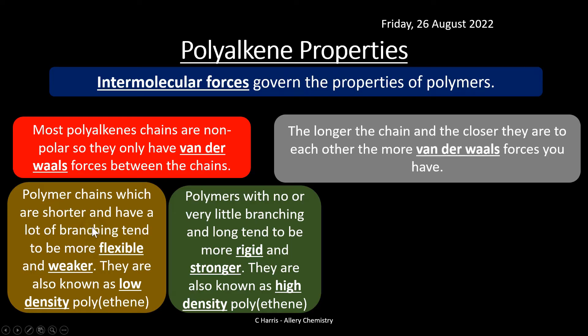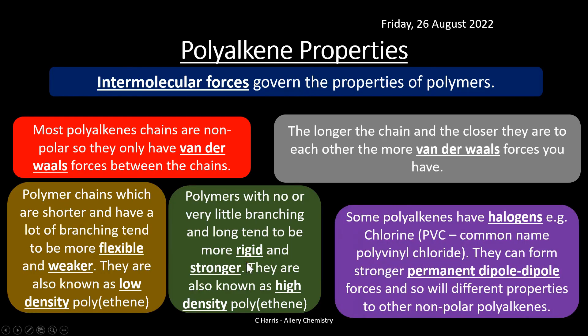Some polyalkenes have halogens in them — for example PVC — and they can form stronger permanent dipole-dipole forces. These offer very different properties compared to standard polyalkenes which don't have halogens and only have van der Waals forces. Polymers with polar molecules or permanent dipoles will have stronger and more robust properties than those which don't.